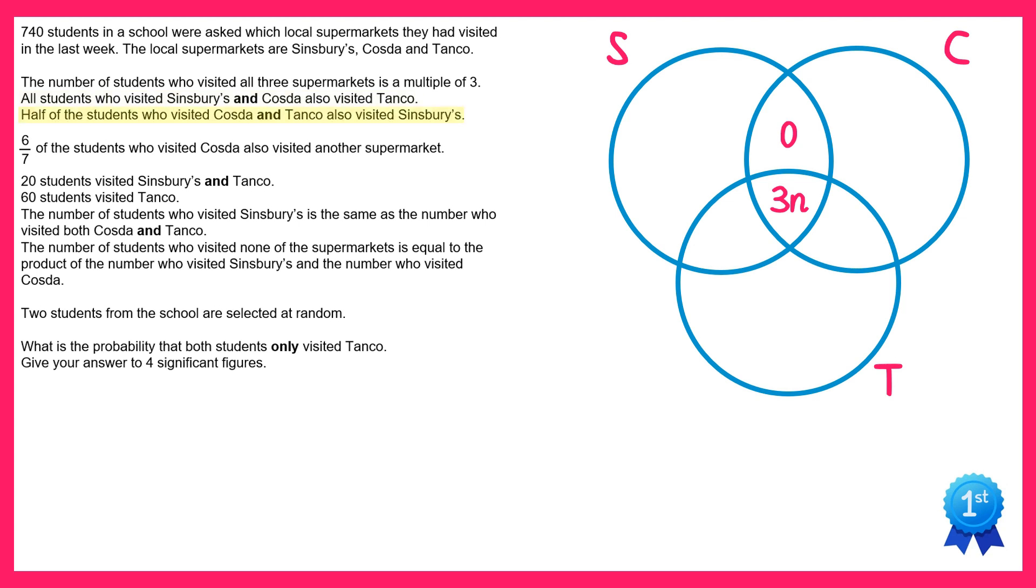Half of the students who visited Cozda and Tanko also visited Sinsbury's. So if we look at the section which represents Cozda and Tanko, half of those students also visited Sinsbury's. Now we know the half of those students that visited Sinsbury's visited all of the supermarkets, so that's the 3n here. This means the other section is also 3n.